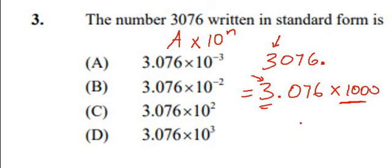Now, we can rewrite this. Let's keep this as 3.076 and then write a thousand as 10 to a power. What power? How many zeros do we have? We have three zeros, so that's the third power of 10.